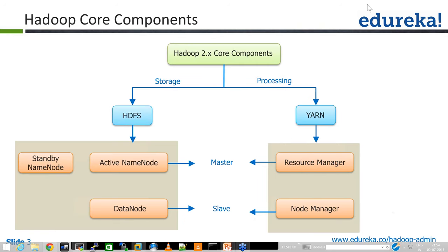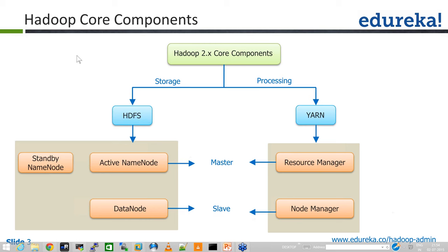We have two core components of Hadoop: one is HDFS, another is YARN. HDFS is composed of two main components — NameNode and DataNode. You can also have a standby NameNode for high availability, or a secondary NameNode if you don't want high availability. From the YARN side there are two more components: ResourceManager and NodeManager. The NameNode and DataNodes are used for storing data — metadata goes into the NameNode and actual data goes into the DataNodes.